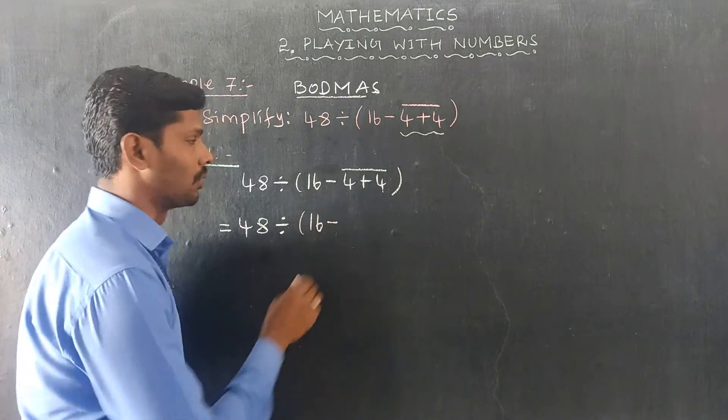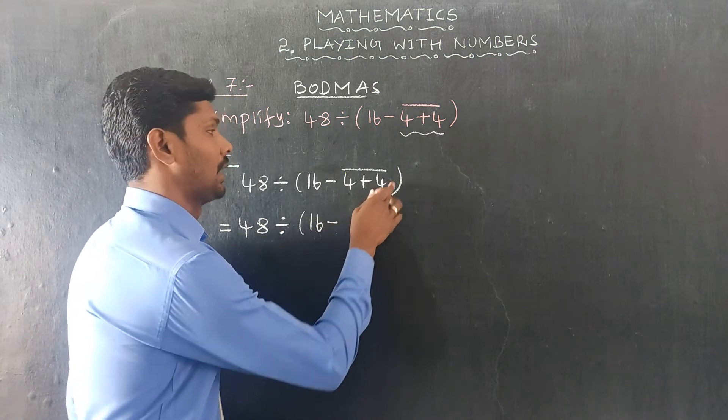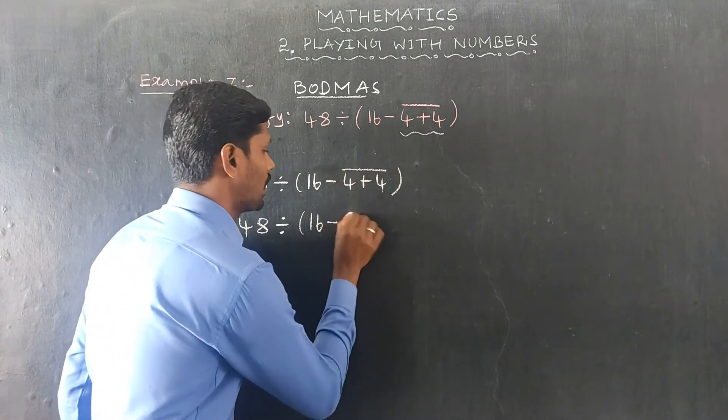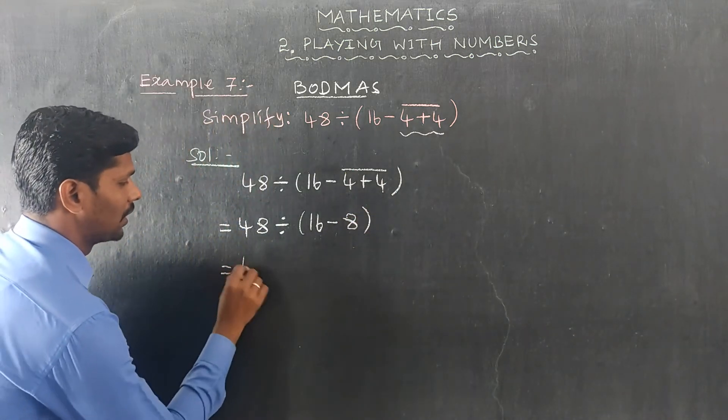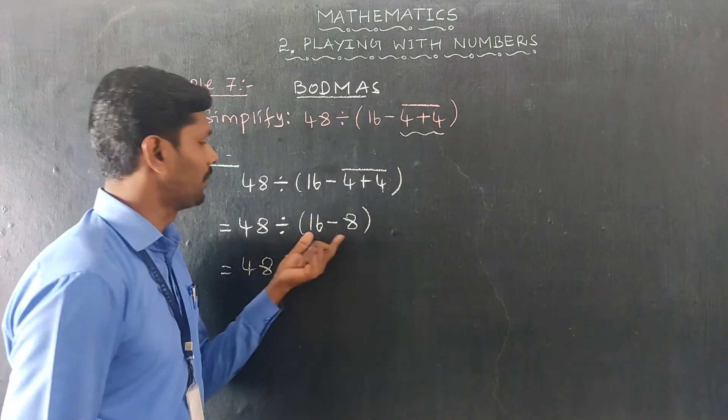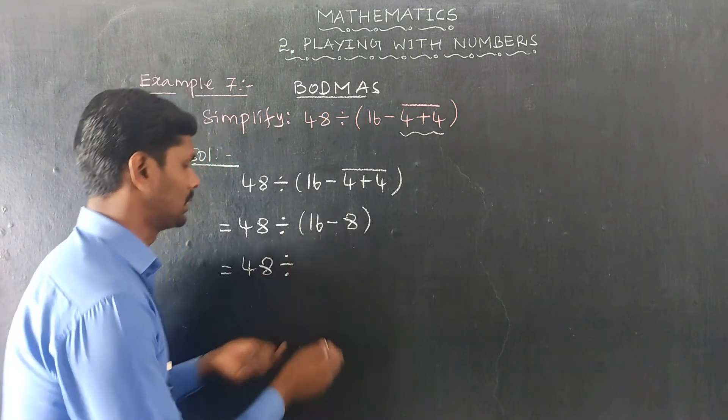16 minus 4 plus 4, the line bracket first: 4 plus 4 is 8. Next, 48 divided by, the simple bracket is the second, 16 minus 8.